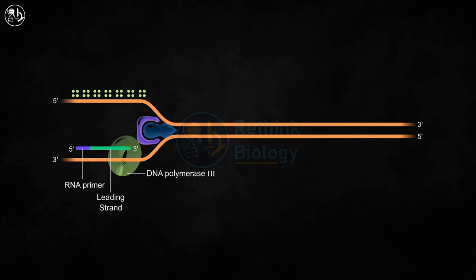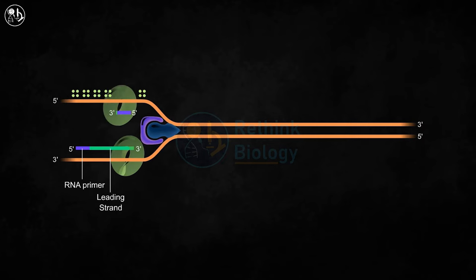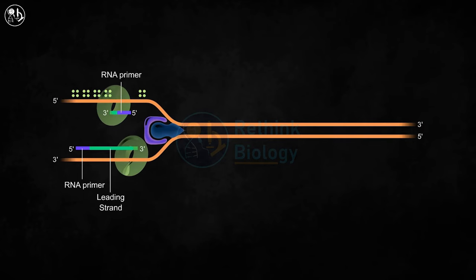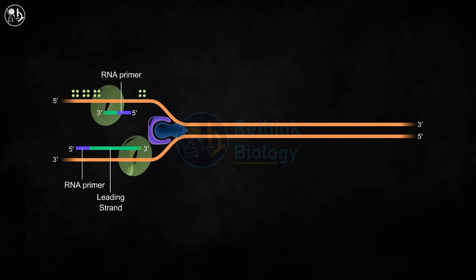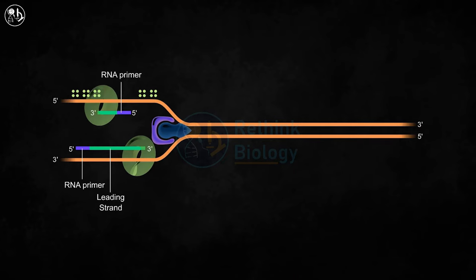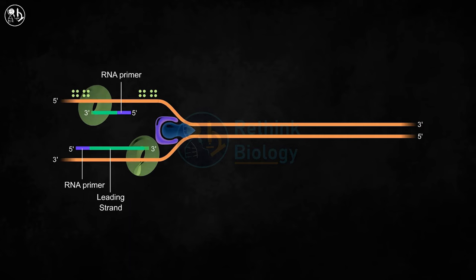The new DNA which is being made in the same direction as the replication fork movement is called the leading strand. On the upper template strand, DNA primase again synthesizes a small RNA primer, after which DNA nucleotides are added to the RNA primer in the five prime to three prime direction by DNA polymerase III.